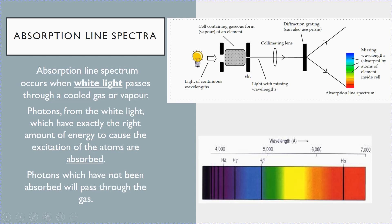Now, because the white light contains all different frequencies, some of the photons which match exactly the energy levels of the atoms will be absorbed. Those that do not match exactly the energy levels will pass straight through.